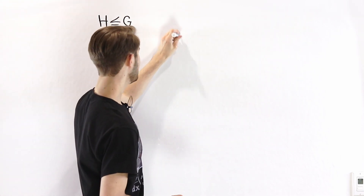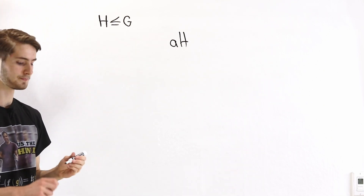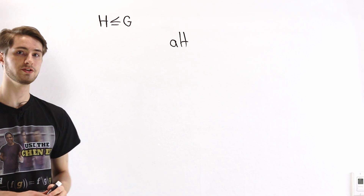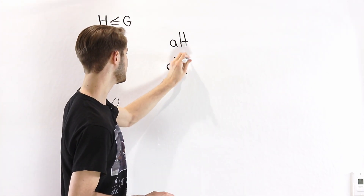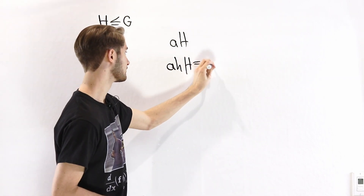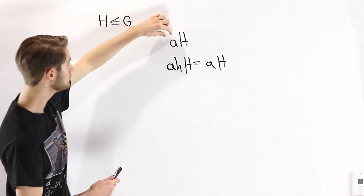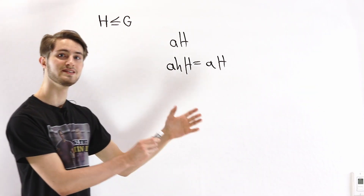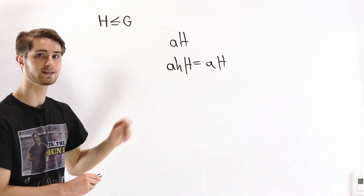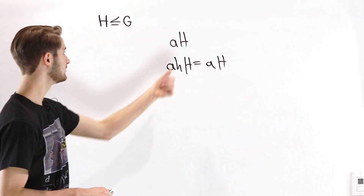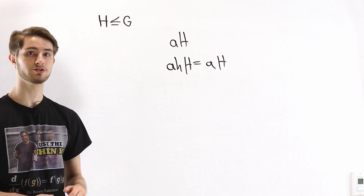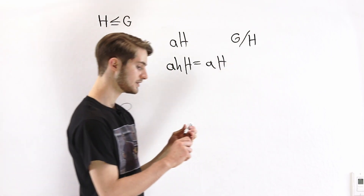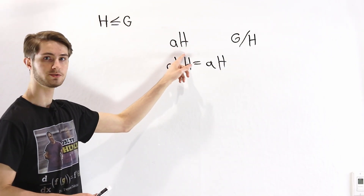Given a subgroup H, we can construct cosets that look like AH by just multiplying on the left by some element of the group. The idea of a quotient group is that we want to turn these cosets into elements of some new group. For example, AH times H — remember H times H just gives us the original subgroup — is equal to AH. This means that looking at cosets instead of individual elements lets us factor out the idea of this subgroup H, which is one reason a quotient group is also called a factor group. We write it as G mod H.